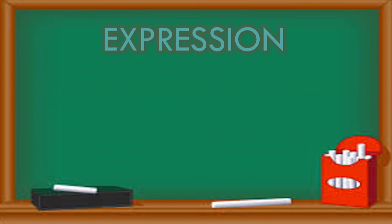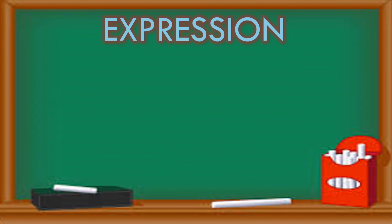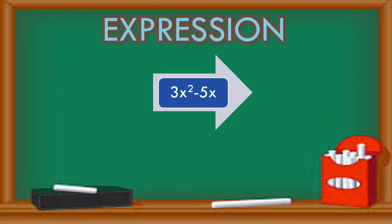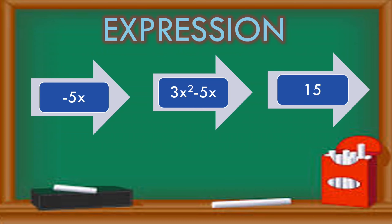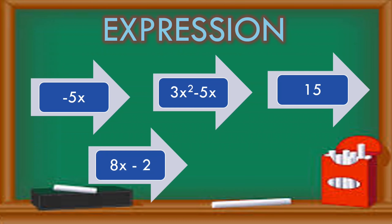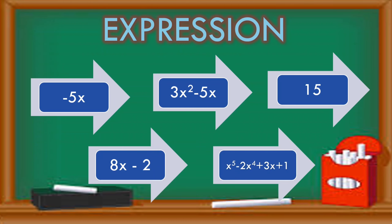Let us try to work on with an expression. These are examples of expression: 3x squared minus 5x, negative 5x, 15, and 8x minus 2x to the fifth minus 2x to the fourth plus 3x plus 1. These are all examples of expression.